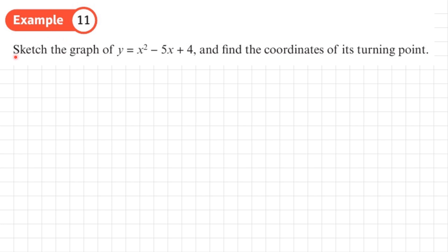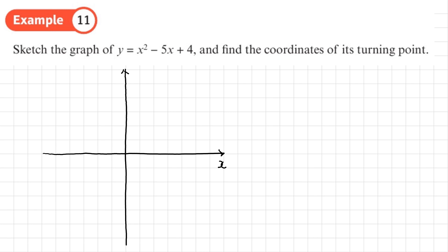Example 11: sketch the graph of y = x² - 5x + 4 and find the coordinates of its turning point. I'll sketch out a coordinate grid and think about what I need. Since the coefficient of x² is positive, it's U-shaped. I have different methods available: factorise, complete the square, or the quadratic formula. Let's try factorising first as it's usually easier.